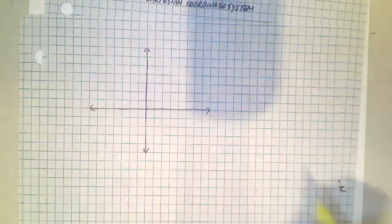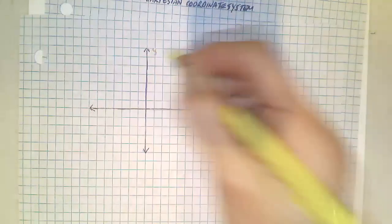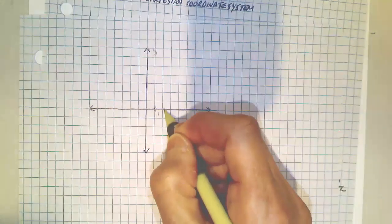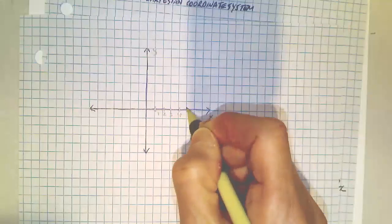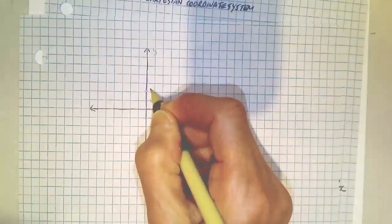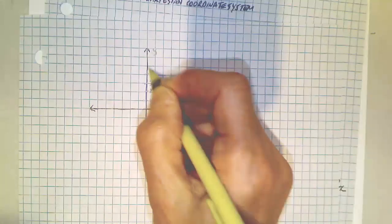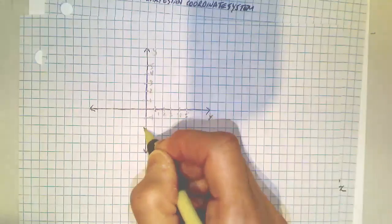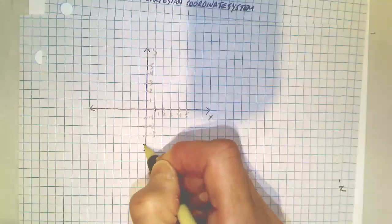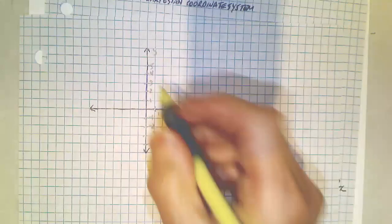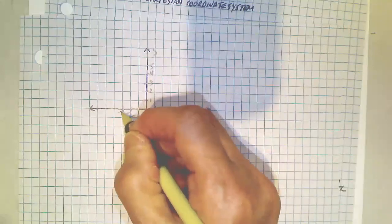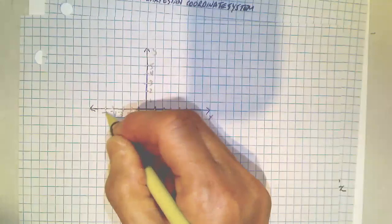But again, if I quickly draw it, this is the X axis. This is the Y axis. One, two, three, four, five. Up is positive. Down is negative. You can see I made kind of a tiny graph, but that's okay. Graphs can be as large or as small as you need.